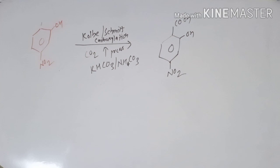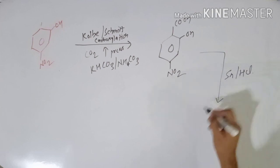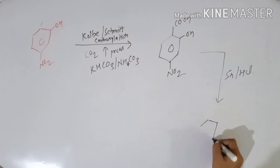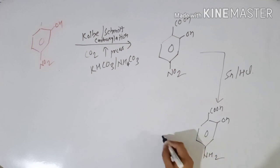Now it's very easy. What we have to do is only reduction. So again in the presence of Sn/HCl you can do the reduction and finally you will get your compound: COOH, OH, and NH2. This is your para-amino salicylic acid. So these are the two simple methods by which we can synthesize para-amino salicylic acid. Thank you.